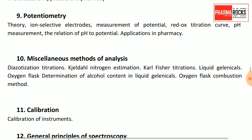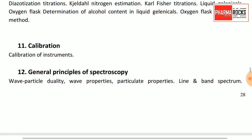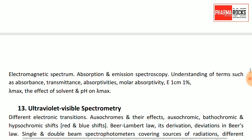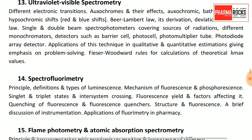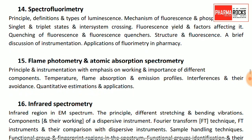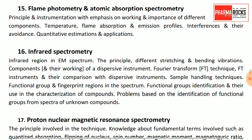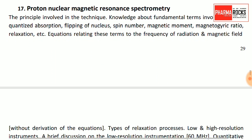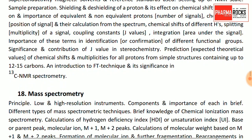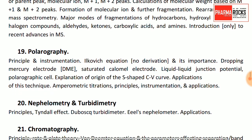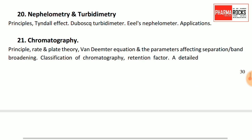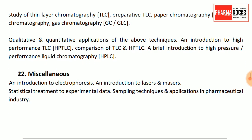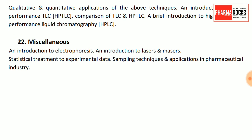Specific analytical methods important for GPAT: diazotization titration, Kjeldahl method, Karl Fischer titration, and oxygen flask combustion method. General principles of spectroscopy — UV, flame photometry, atomic absorption spectroscopy, IR, proton NMR, mass spectroscopy, polarography, nephelometry, turbidometry, and chromatography techniques.